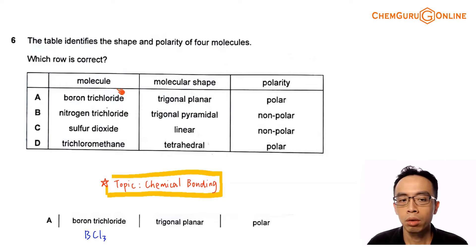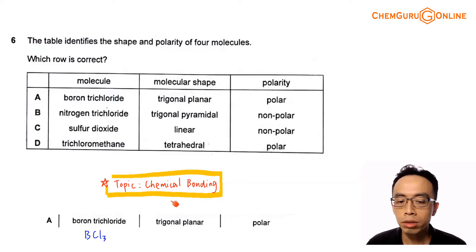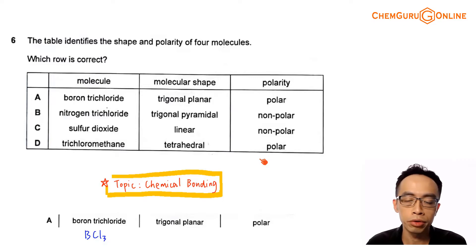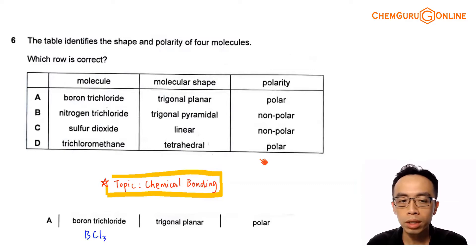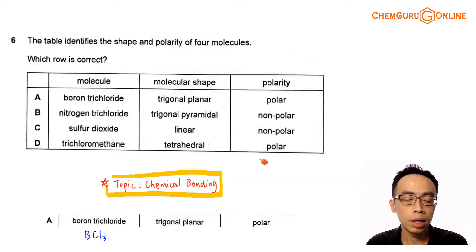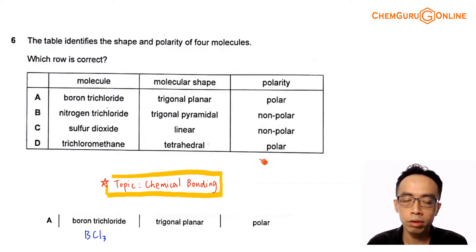We are given four molecules and we want to determine the shape and the polarity of each molecule. The topic tested is under chemical bonding. What we have to do is first determine the shape of the molecule, and from the shape, determine whether the molecule is overall polar or non-polar. We need to determine the total number of bond pairs and lone pairs around the central atom, then determine the molecular shape, decide whether the bonds are polar, consider the dipole moments, and see whether they cancel out.